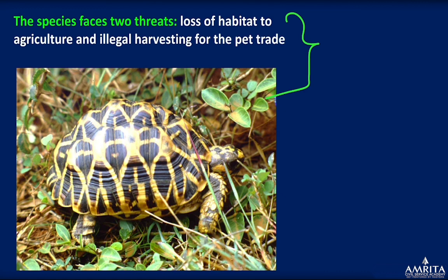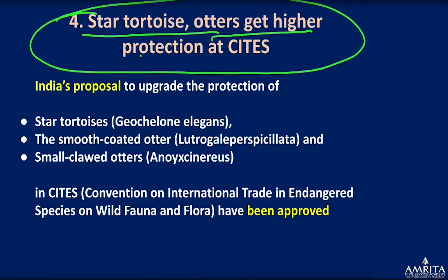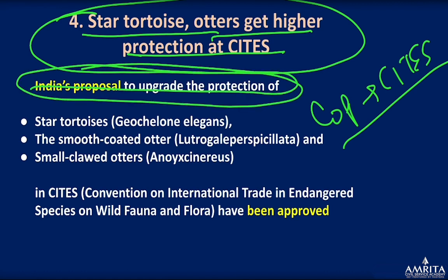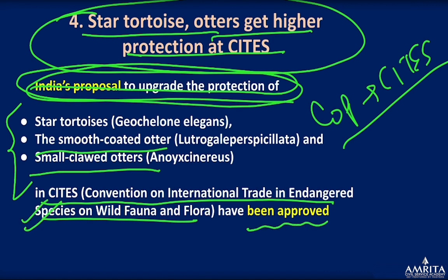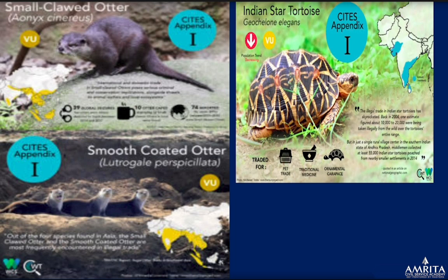The Star Tortoise faces two threats: habitat loss due to agriculture and illegal harvesting for the pet trade, as people like to keep this beautiful species as pets. The Star Tortoise was recently in the news because at a recent CITES COP, it received an upgrade of protection status. The three species getting upgraded — Star Tortoise, Smooth-coated Otter, and Small-clawed Otter — are all Vulnerable.